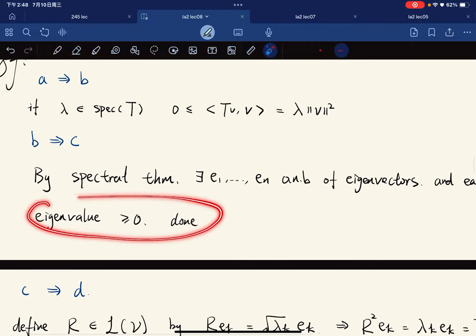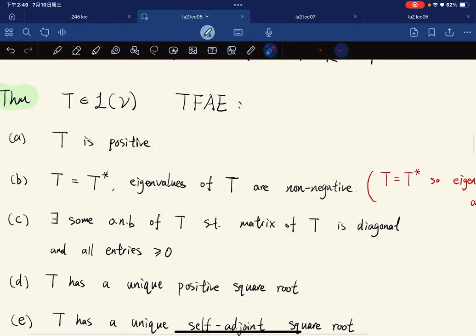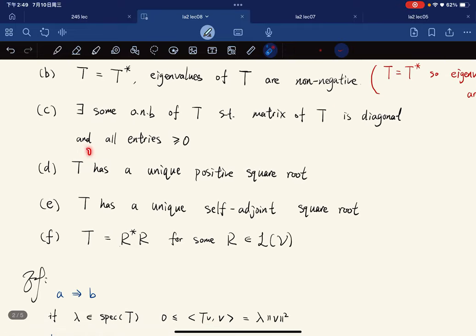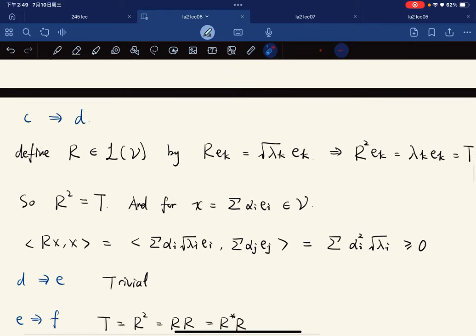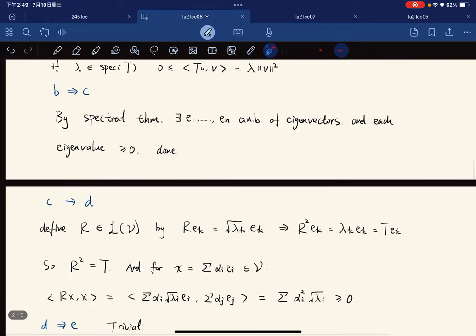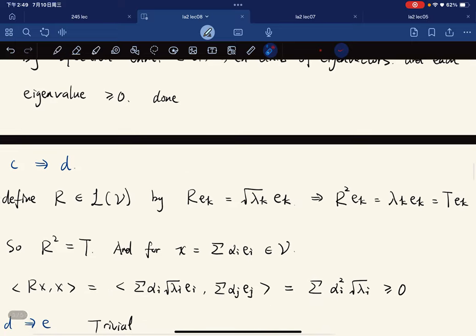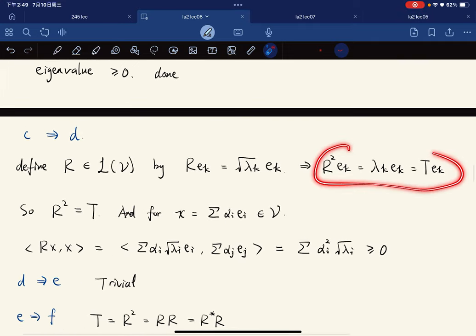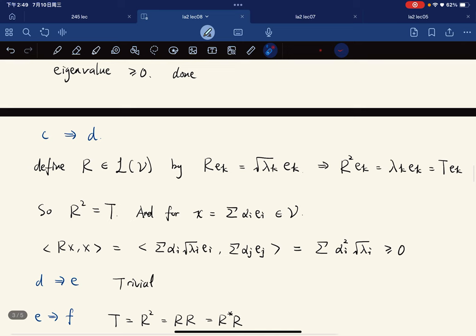C implies D: T has a unique positive square root. To show this, given an operator R defined by R on each basis equals the square root of λ_k times e_k, where λ_k are the real numbers from the orthonormal basis and the spectral theorem. We have specified its value on the basis, so R is uniquely determined.